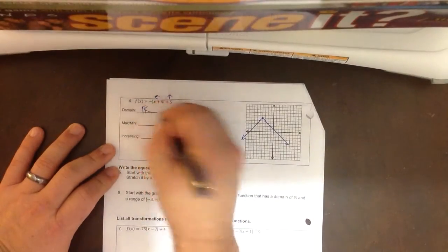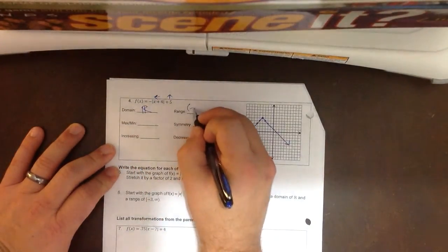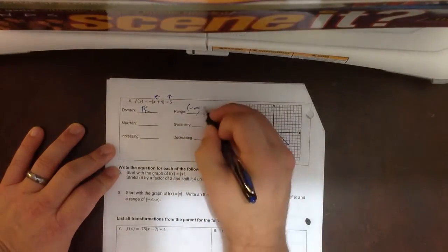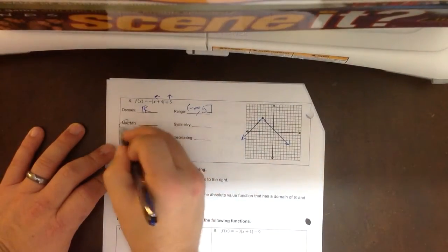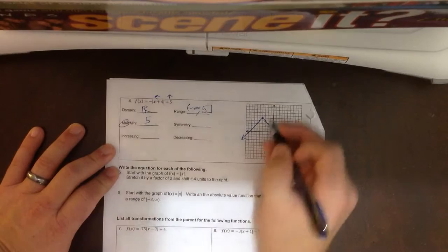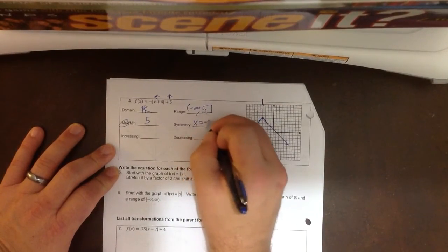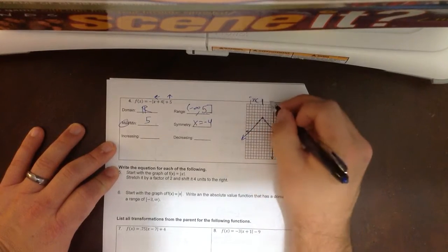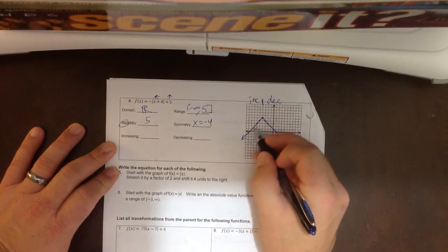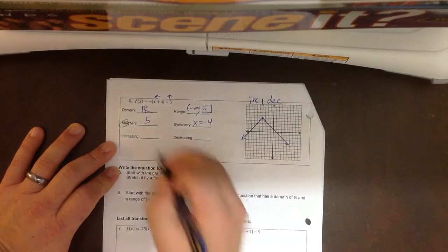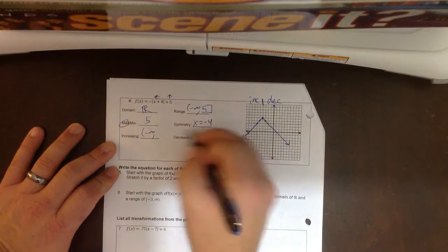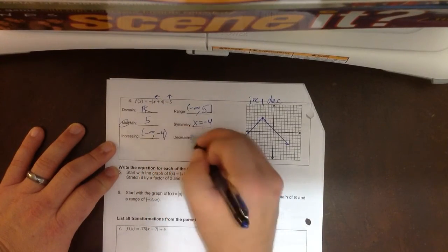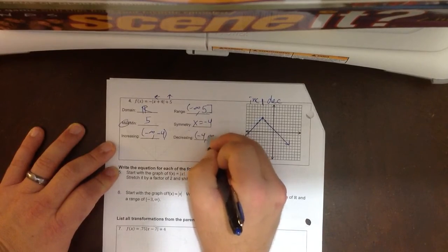Domain is all real numbers. My range starts at negative infinity and works its way up to 5. So it has a maximum of 5. Symmetry is right here, and x equals negative 4. This is going to be increasing on this side and decreasing on this side. A positive slope and then a negative slope. And so negative infinity to negative 4, and then negative 4 to infinity.